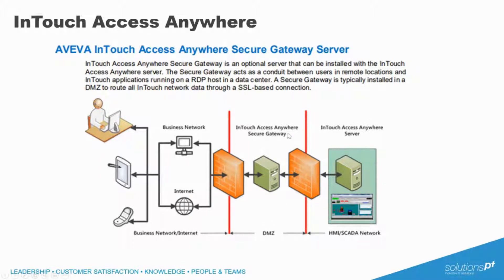In the DMZ, you have the secure gateway, which permits or denies access to the InTouch application according to the credentials that a user provides when logging in. These can be OT credentials, which are permitted access to the application normally, or you can use another optional component of Access Anywhere, which is the authentication server, which will check the user login against your domain as well.